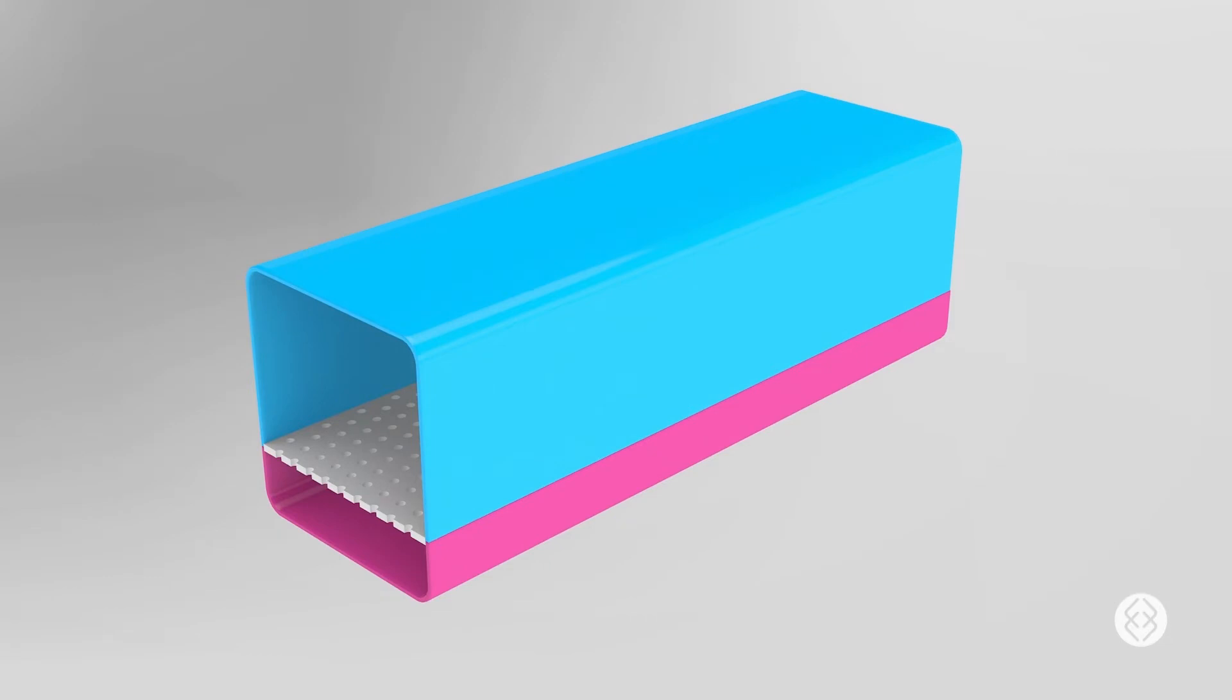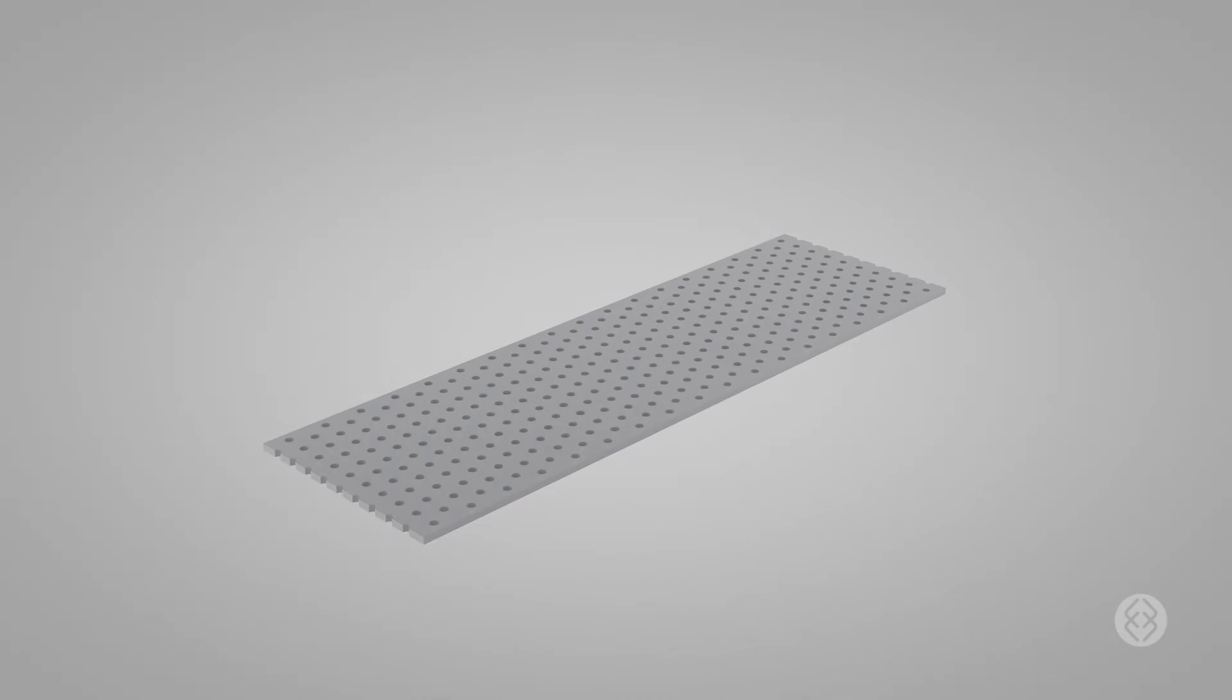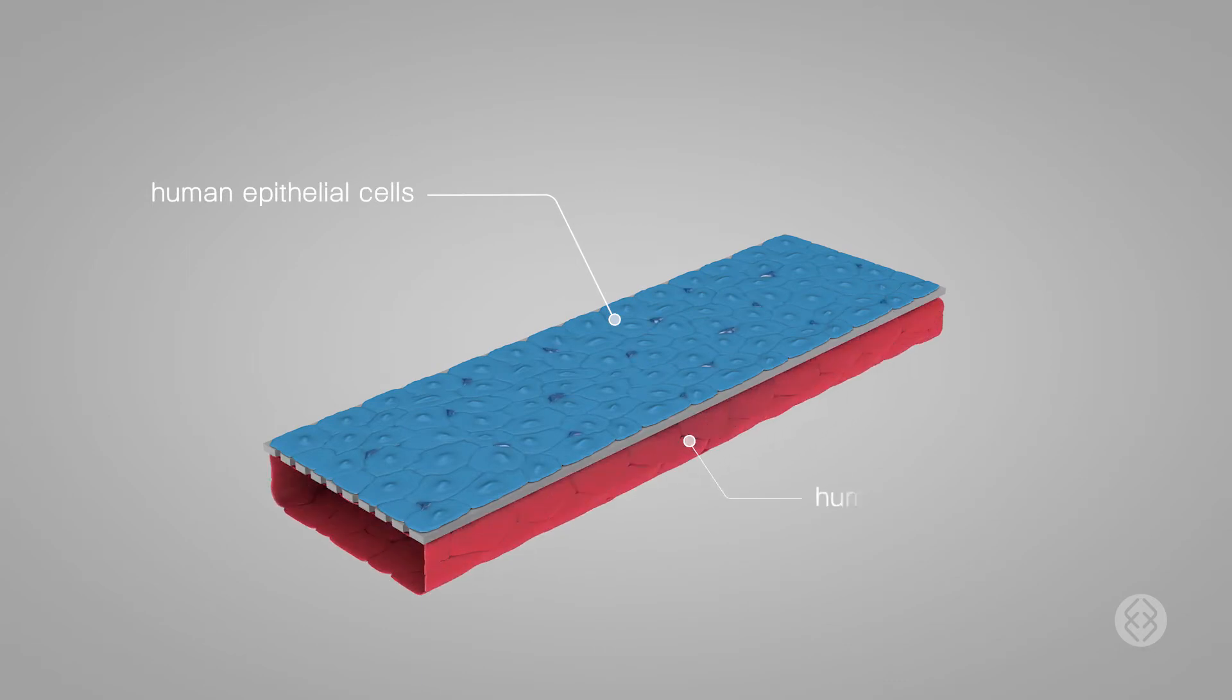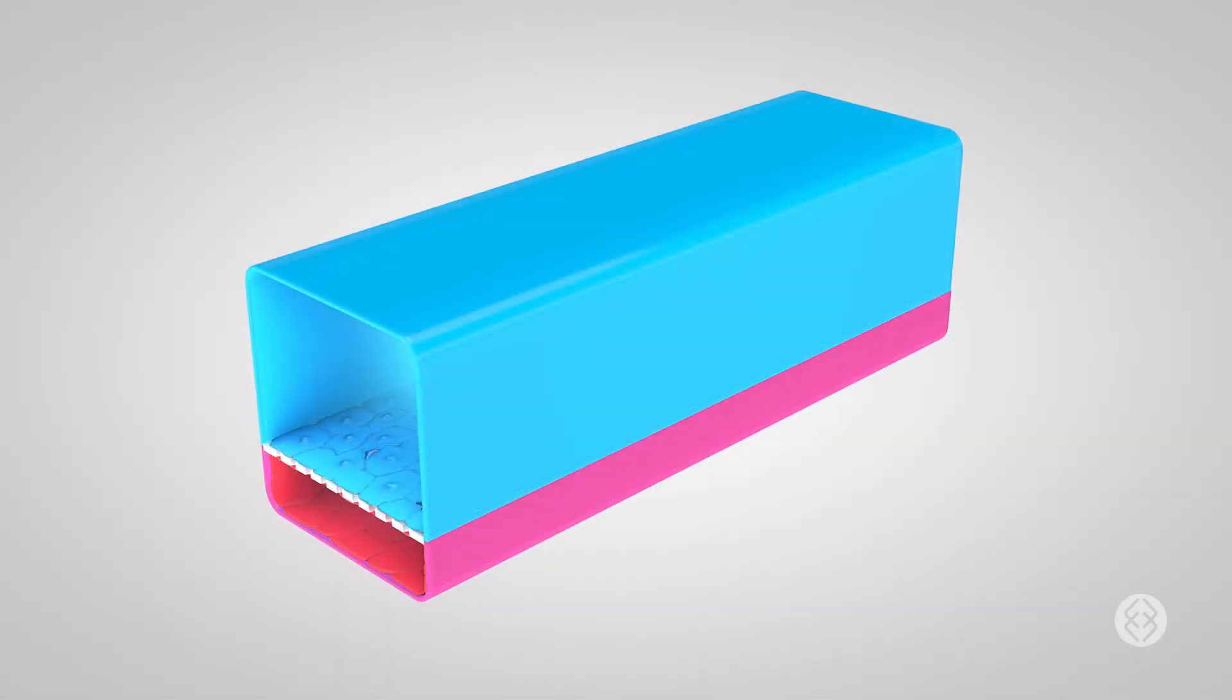It contains two fluidic channels that are separated by a porous stretchable membrane. The top side of the membrane is covered with human alveolar epithelial cells. The bottom channel is lined with human endothelial cells. This recreates the arrangement of the alveolar capillary interface that exists in the human lung.